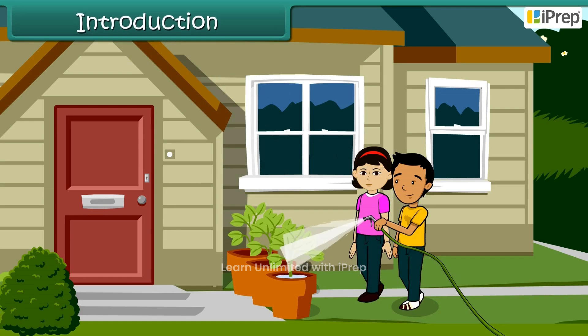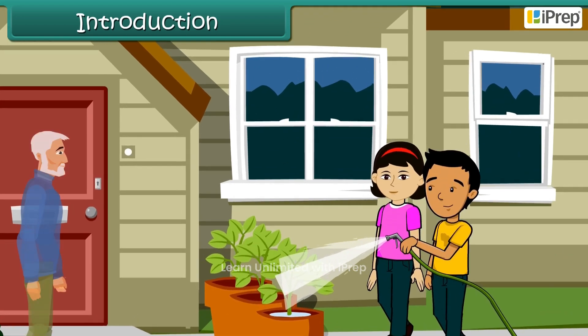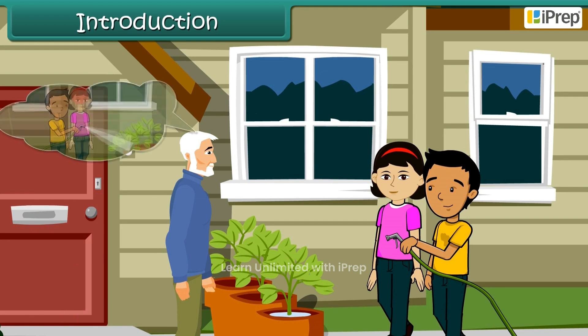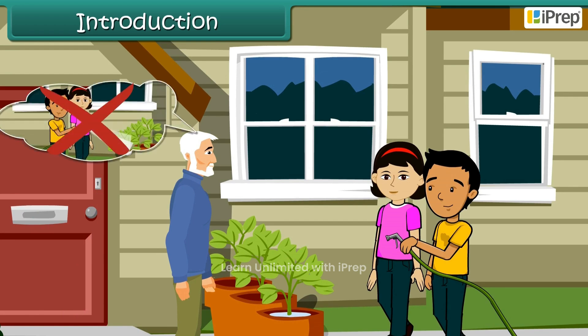Gopal and Gita were watering the plants using a hose. On seeing this, their grandfather came running to stop them. He advised them not to use a hose pipe so that the precious water was not wasted. Let us see what else he added to his advice.